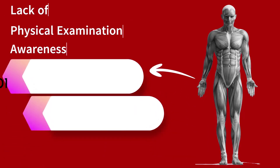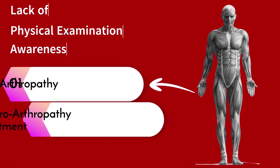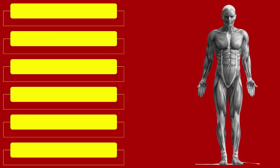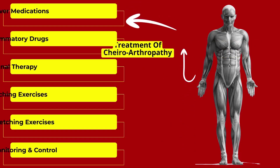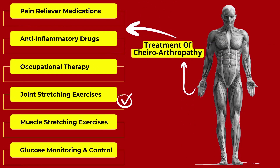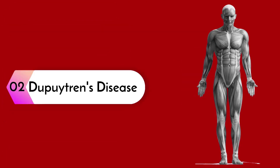The main cause of the disease is the lack of physical examination of the patients. Chiroarthropathy can be confirmed and treated in six different ways: pain relievers, anti-inflammatory drugs, physiotherapy, joint stretching, muscle stretching, and regular sugar check.